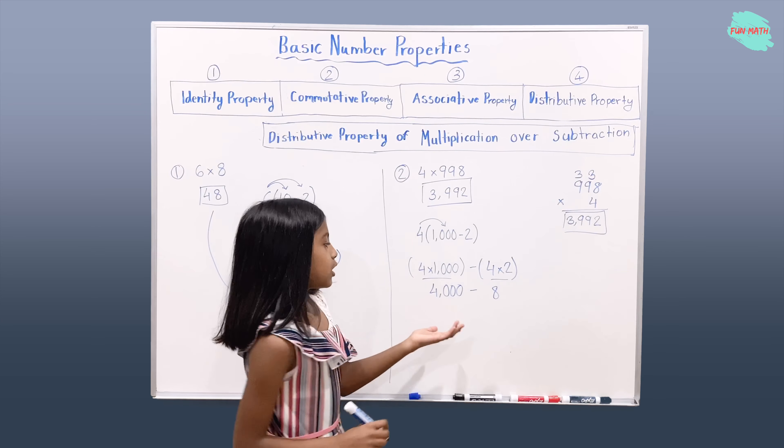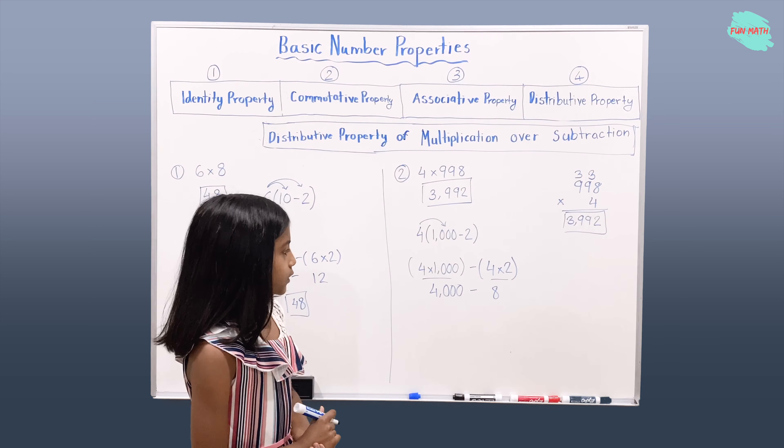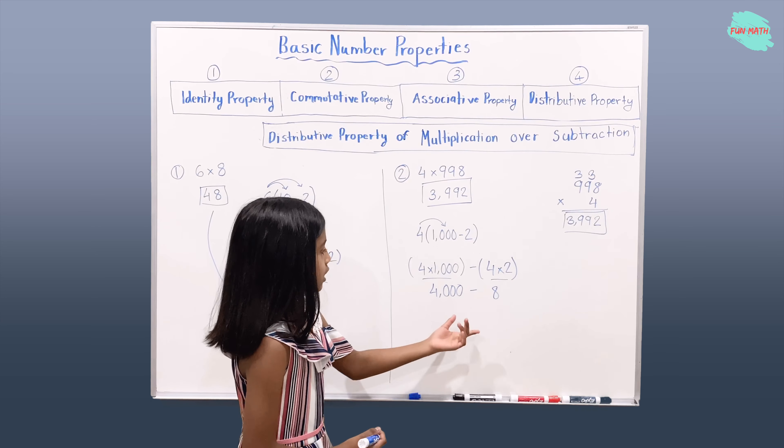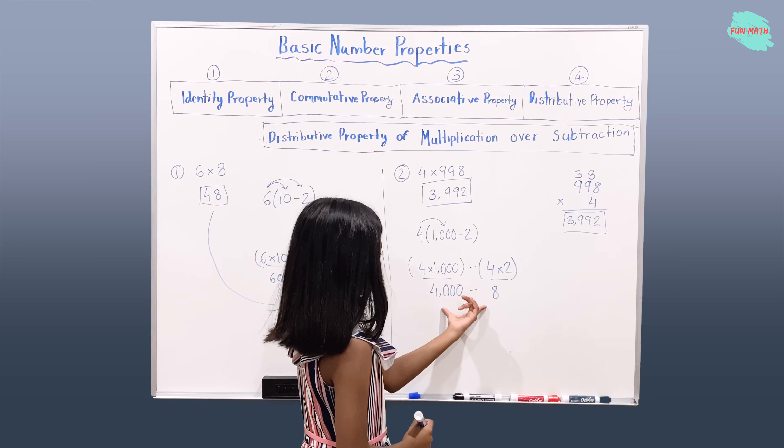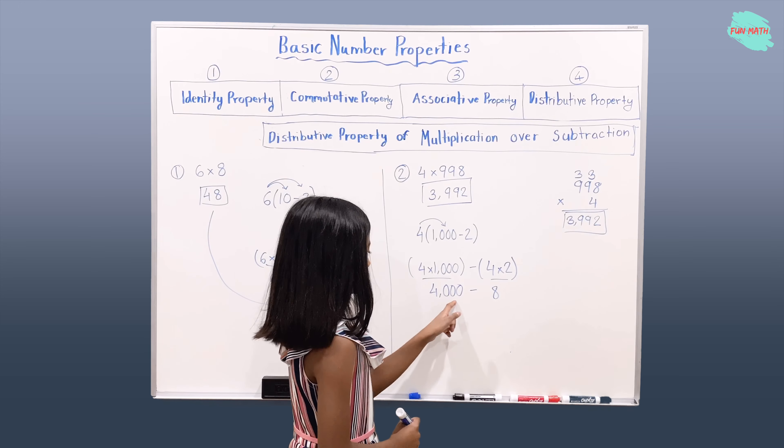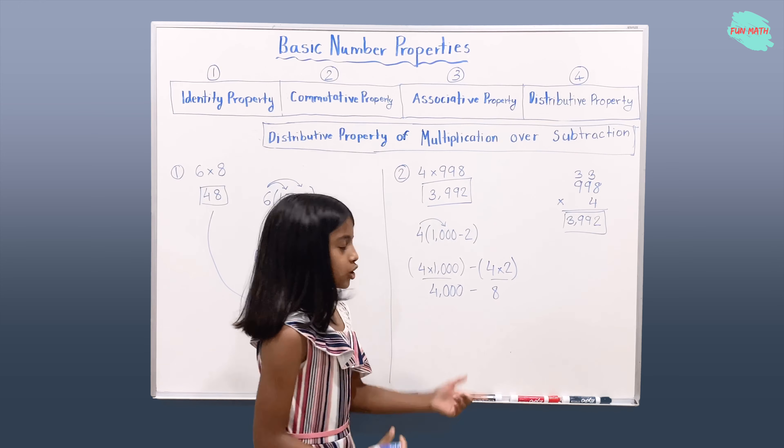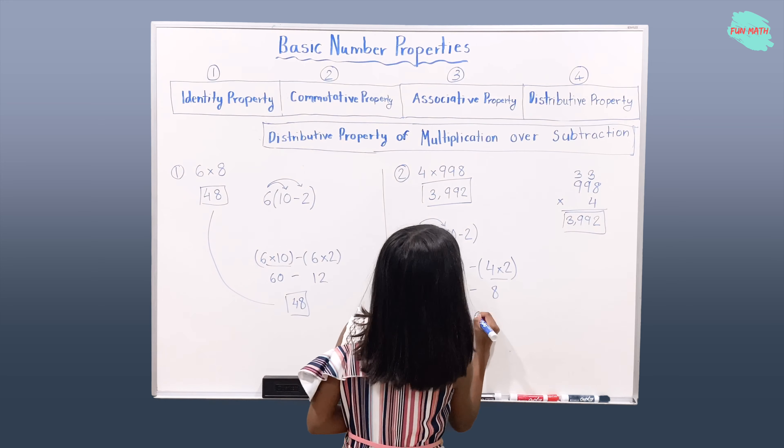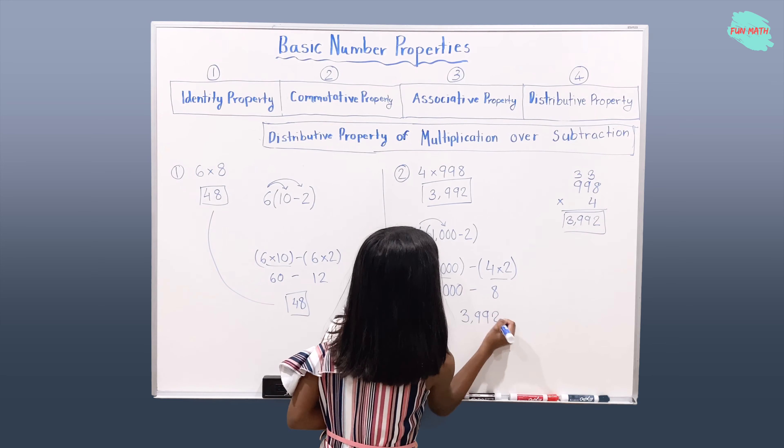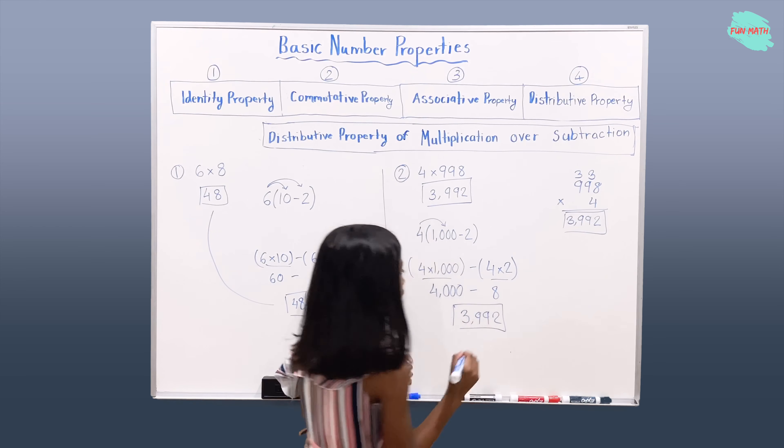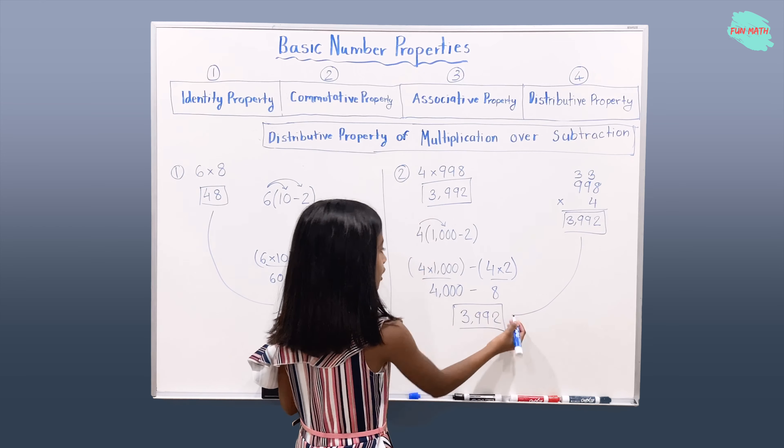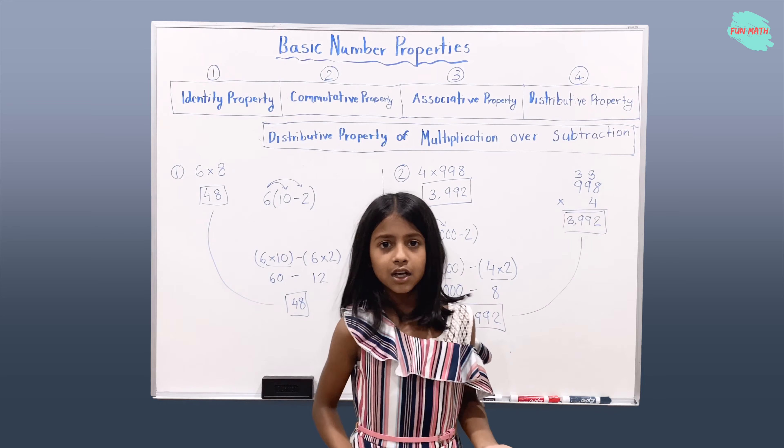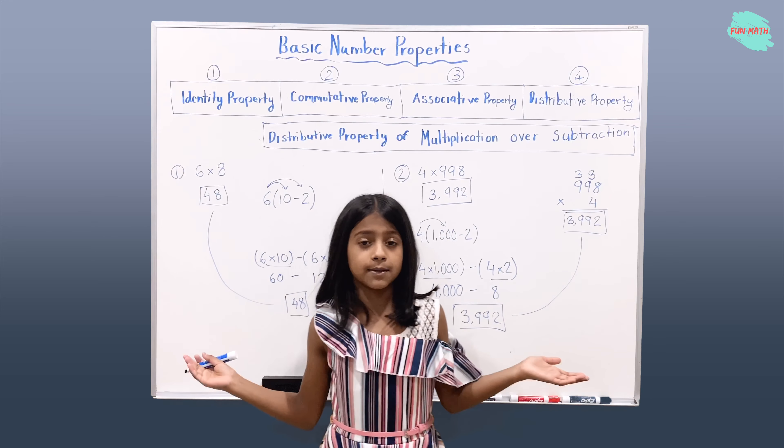Subtract it. So if you subtract 4,000 by 8, you would get 3,992. Oh, we got the right answer. That means we got the right product for these two problems.